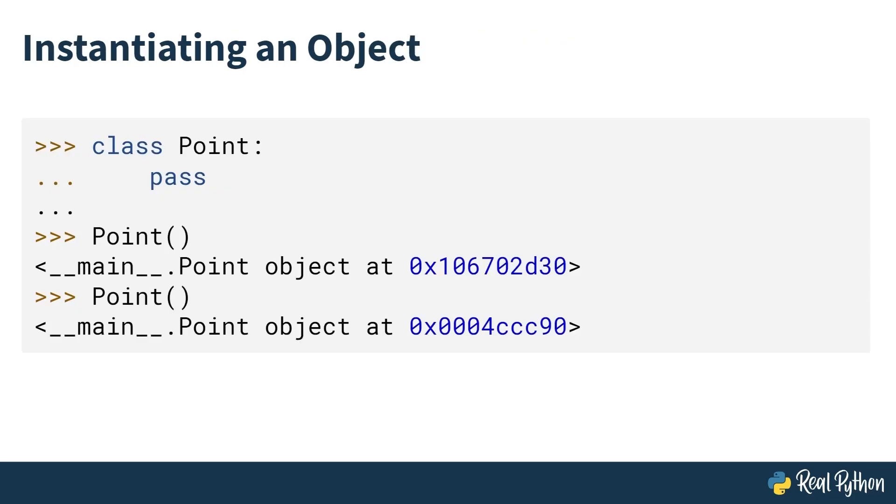Once you have a class, you can then instantiate it. In this example on screen right now, you have class Point, and you're passing, so it's just a blank class. You take the name of the class and you add some brackets next to it. Just a quick note on terminology here. When I say brackets, I mean round brackets or parentheses. If we come across square, curly, or angled brackets, I'll explicitly say so. But if I just say brackets, I'm referring to round brackets or parentheses. This instantiates the class. You can do this various times, and it will create two instances. The default representation of the class, which is the string between the two chevrons, says that the point object is at this long number, which just refers to its memory address. As you can see, these two point instances have two different addresses, indicating that they are two different instances of the point class.